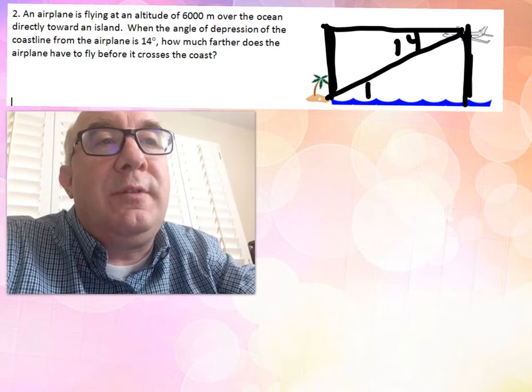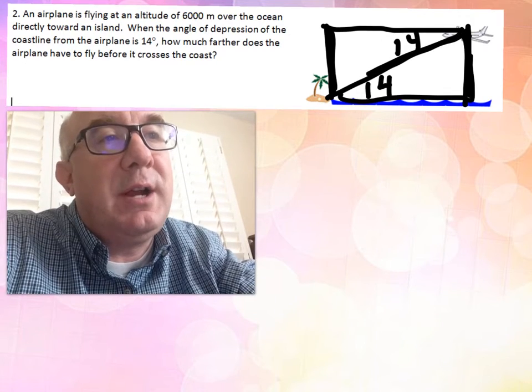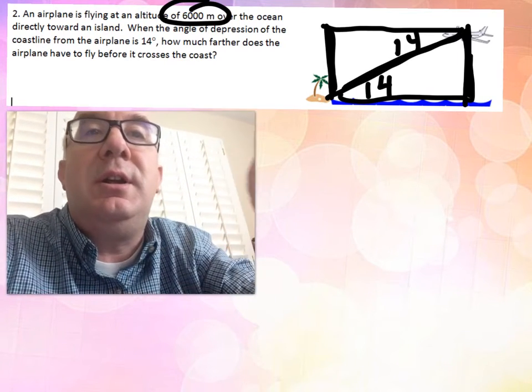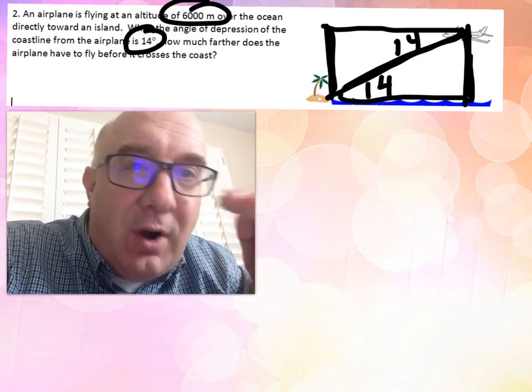So you have the 6000 as your altitude, your 14 as your angle, and it says how much farther does it have to go before it flies over the coast. And that can be x here or it can be x here.